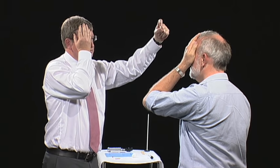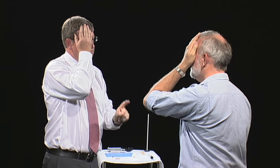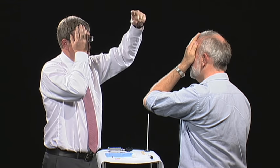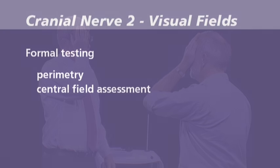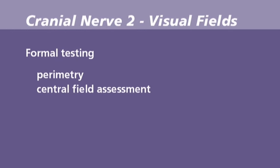I'm going to test your visual fields. Could you cover your right eye with your right hand, please? I'd like you to look and concentrate on the centre of my eye, and I'm going to bring my finger in. When the finger moves, I'd like you to say yes. When I'm doing this, I'm comparing the patient's visual field with my own. Could you swap eyes now, please? If an abnormality is detected, a formal visual assessment by perimetry or central field assessment could be organised.